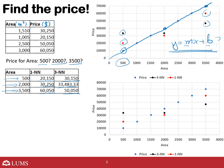Agar m aur b ki values mujhe kisi tarah se mil jayen, toh main simply x ki jagah 500 rakh ke puch sakta hun ke output — area price — kya hogi, ya 2000 rakh ke, ya 3500 rakh ke. Aap ka pura machine learning ka problem yeh ban jaye ga: y (output) = m × x (input feature) + b. Input feature yahan dalenge, aur y — jise hum h(x) bhi kahte the — nikal ke hamare paas aa jaye ga. We can then compute mean squared error or any other error to figure out how well our algorithm performs. So let's stop here and continue in the next video, inshallah.